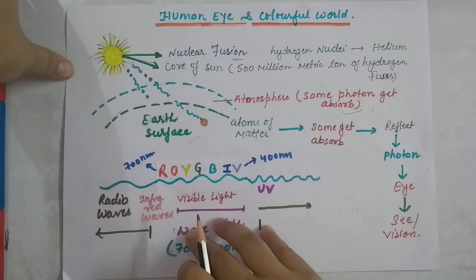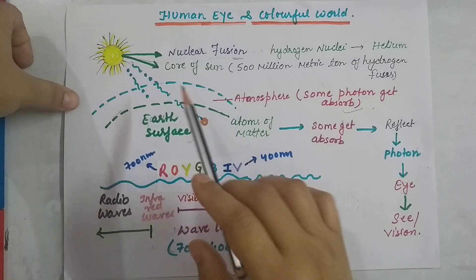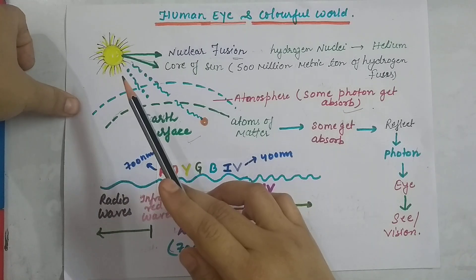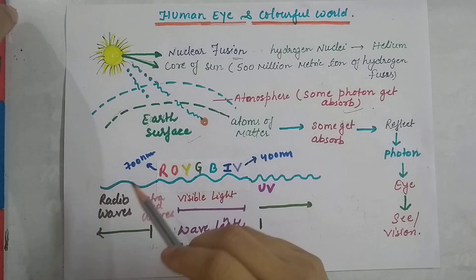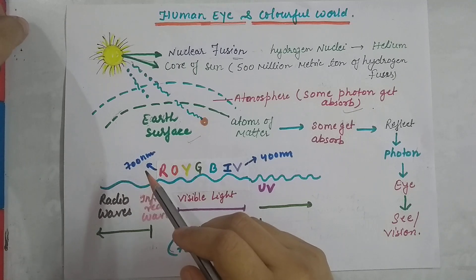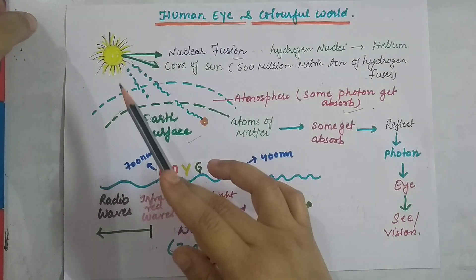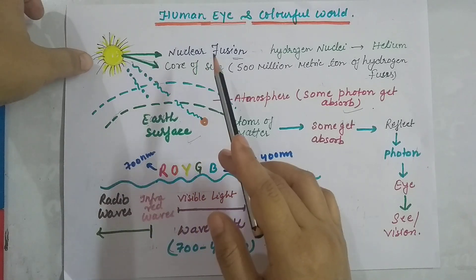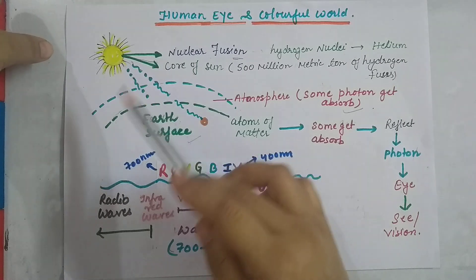Let's see what the human eye and colourful world is about. Here I have given the illustration. We know that the sun is the ultimate source of energy — we get all the light that we get from the sun. It is the ultimate source of energy, and nuclear fusion always occurs inside the sun.